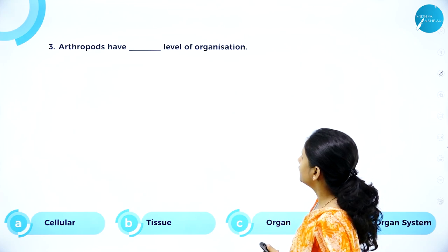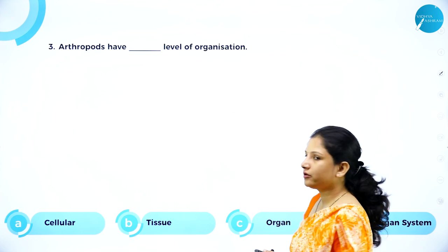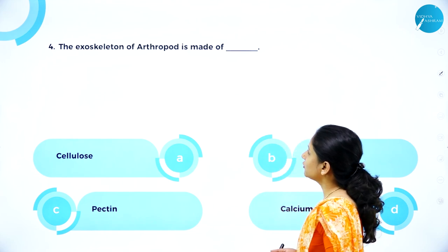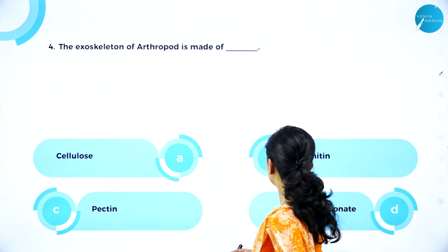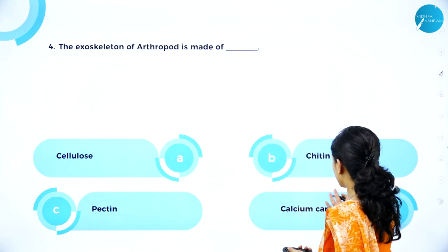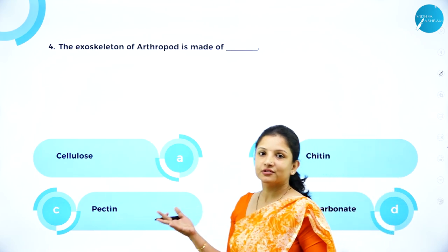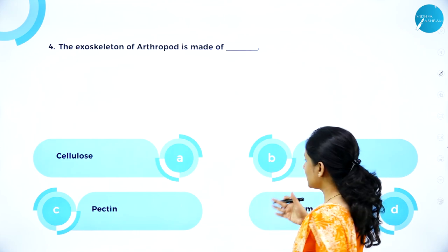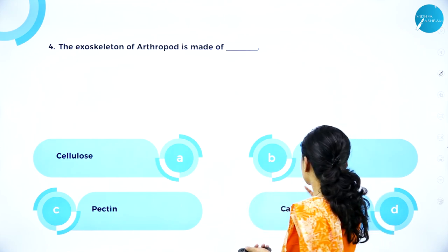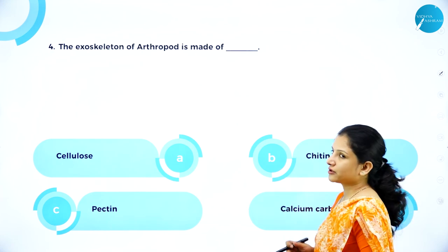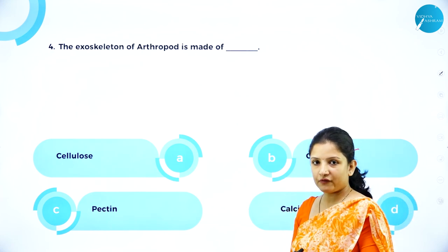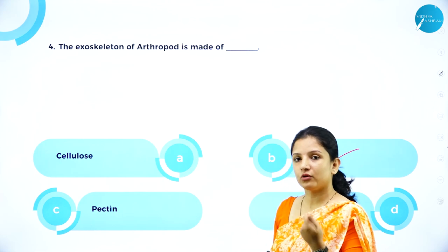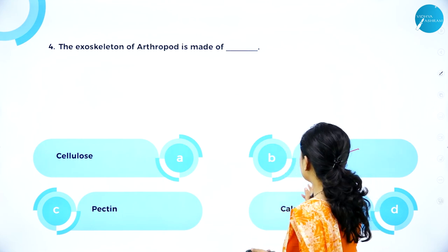MCQ: Arthropods have dash level of organization — is it cellular, tissue, organ, or organ system? They have organ system level of organization. Next MCQ: The exoskeleton of arthropods is made of — cellulose, chitin, pectin, or calcium carbonate? Cellulose is found in plants; pectin is found in fruits; calcium carbonate is found in mollusks. Chitin is the right answer, because the exoskeleton of arthropods is chitinous.